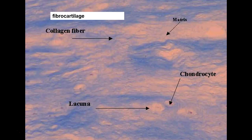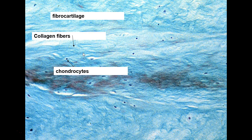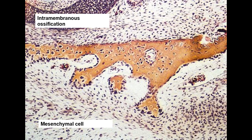There's fibrocartilage — we've already seen that, that was probably on your last test. There are lacunae with chondrocytes in them, and here are your little collagen fibers stained blue. Same thing again — fibrocartilage with little lacunae with chondrocytes in them; they stain the collagen fibers blue.